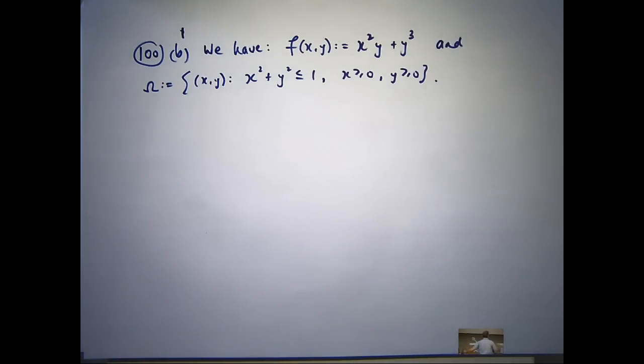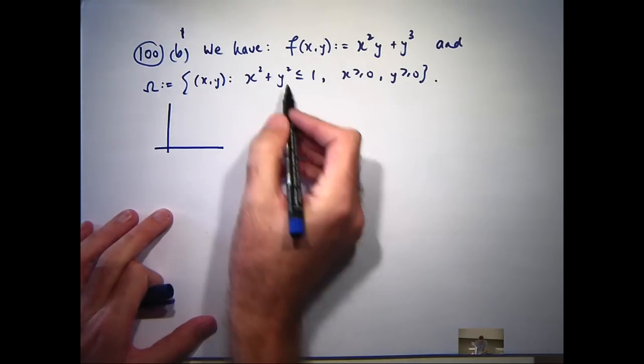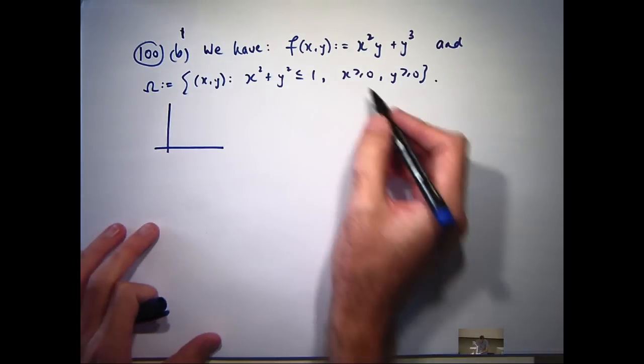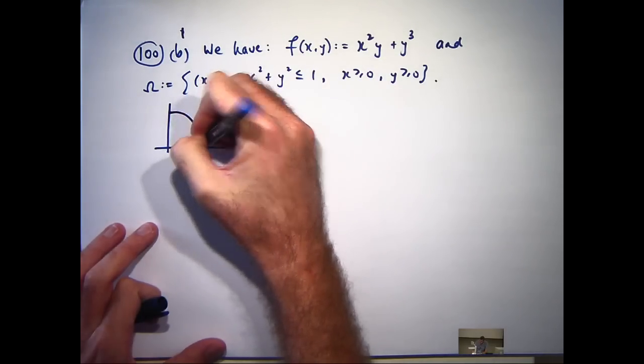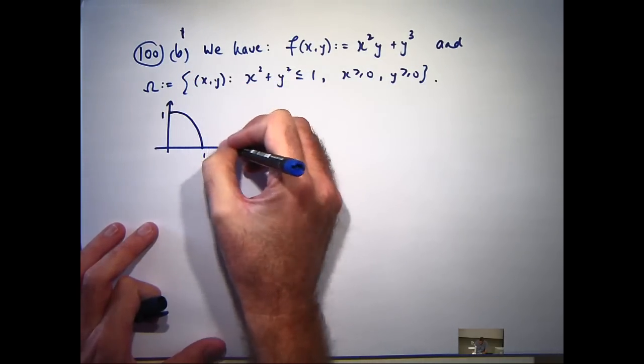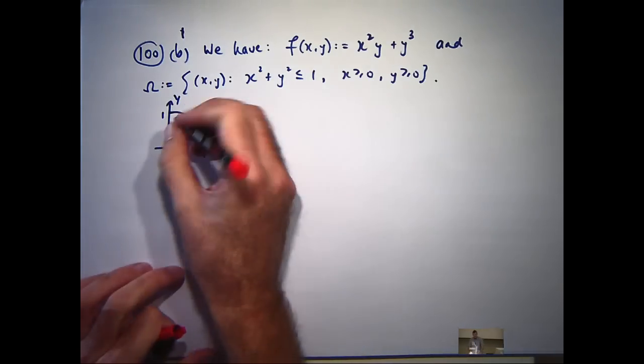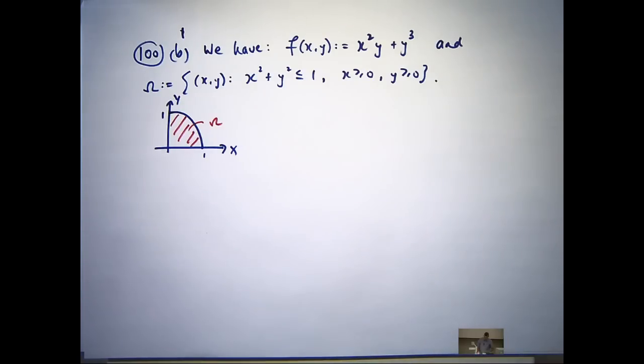OK, so if I wanted to sketch this, I could draw in my circle x squared plus y squared equals 1, which will be something like that, and then I realize that x is non-negative and y is non-negative. So this would be our region of integration.